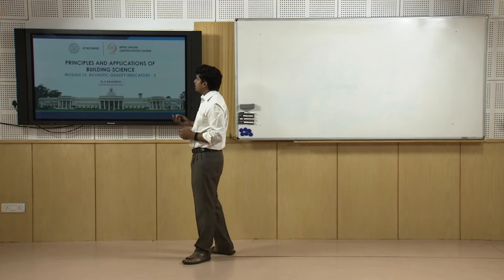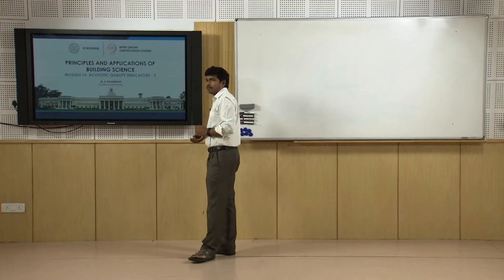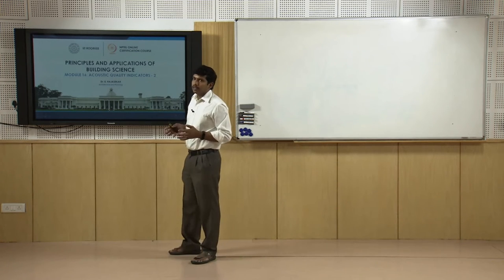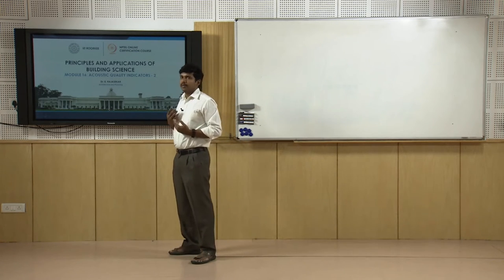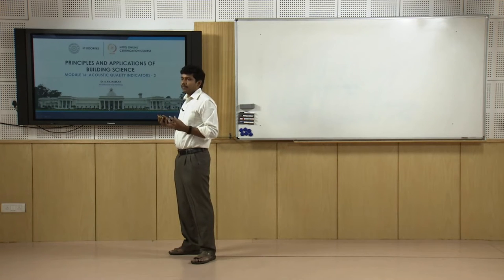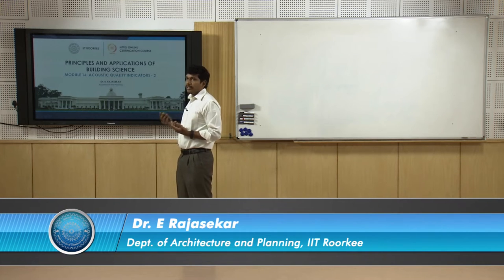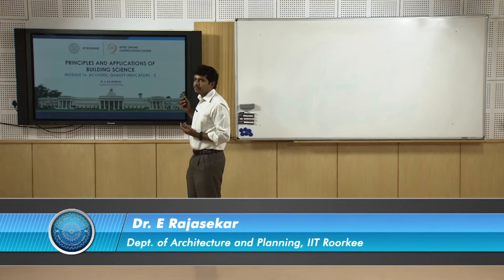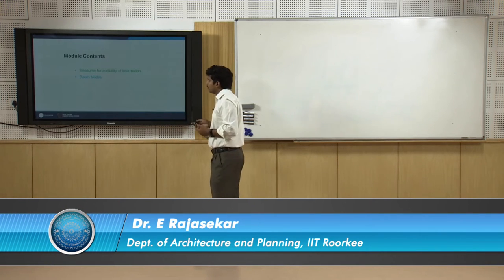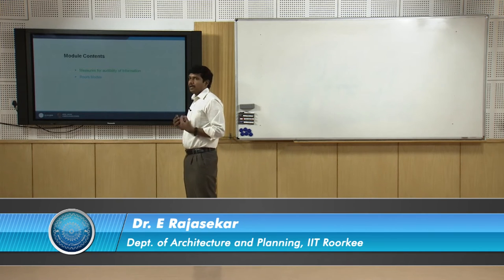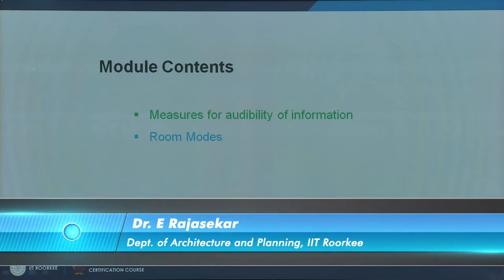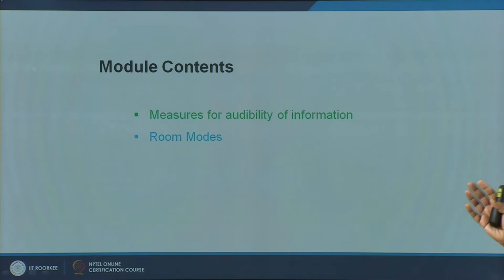In the last module, we looked at a few acoustic quality indicators which included indicators of background noise level. We also looked at a major component called reverberation time. We have a few more indicators which we will address in the current module. These are measures for audibility — how much audible the information is.